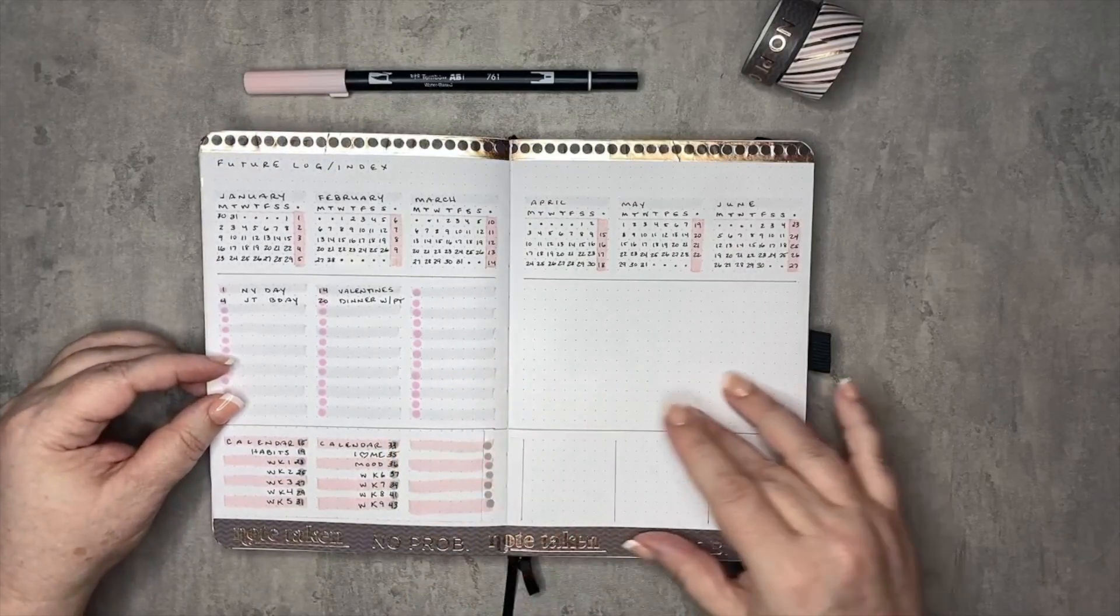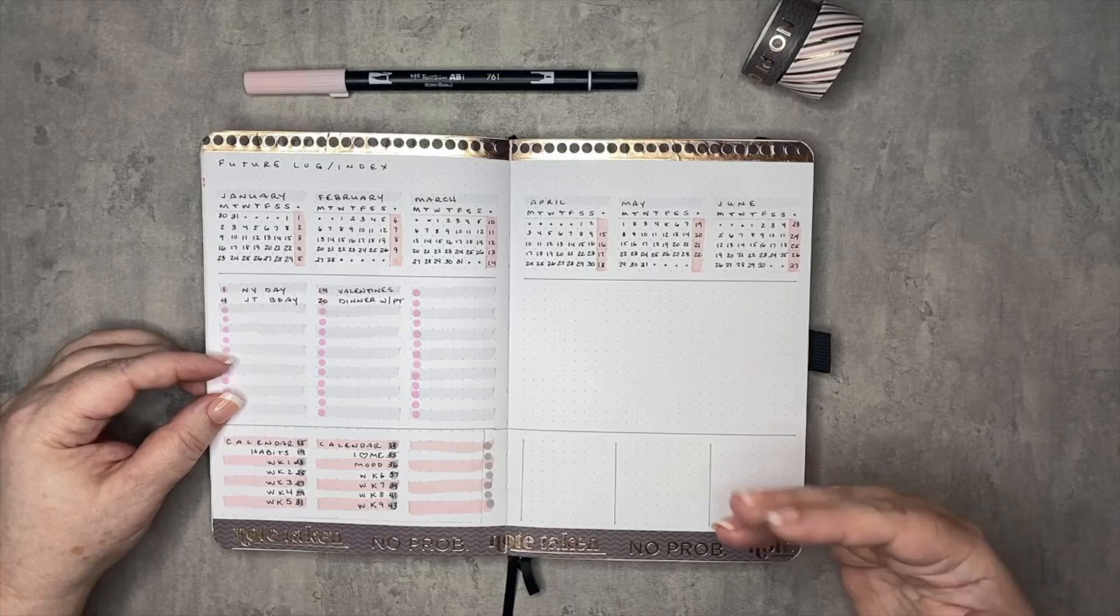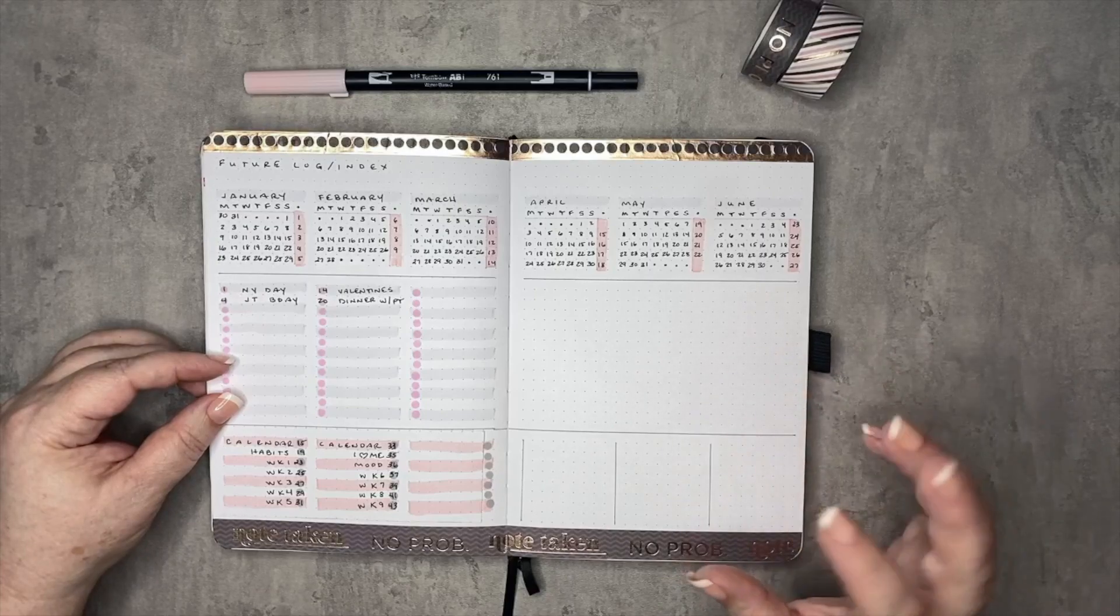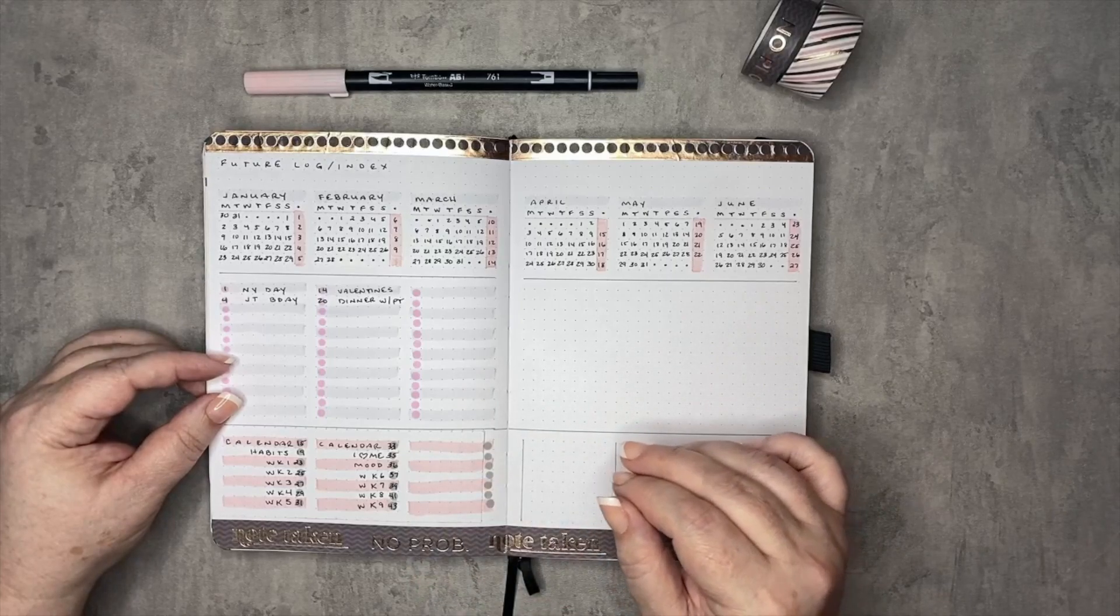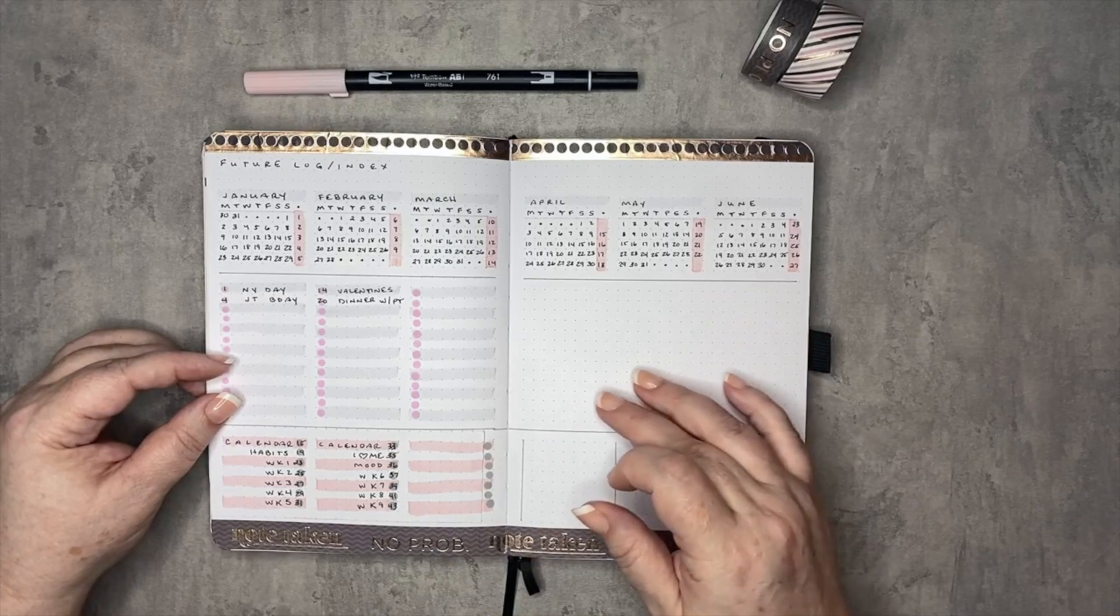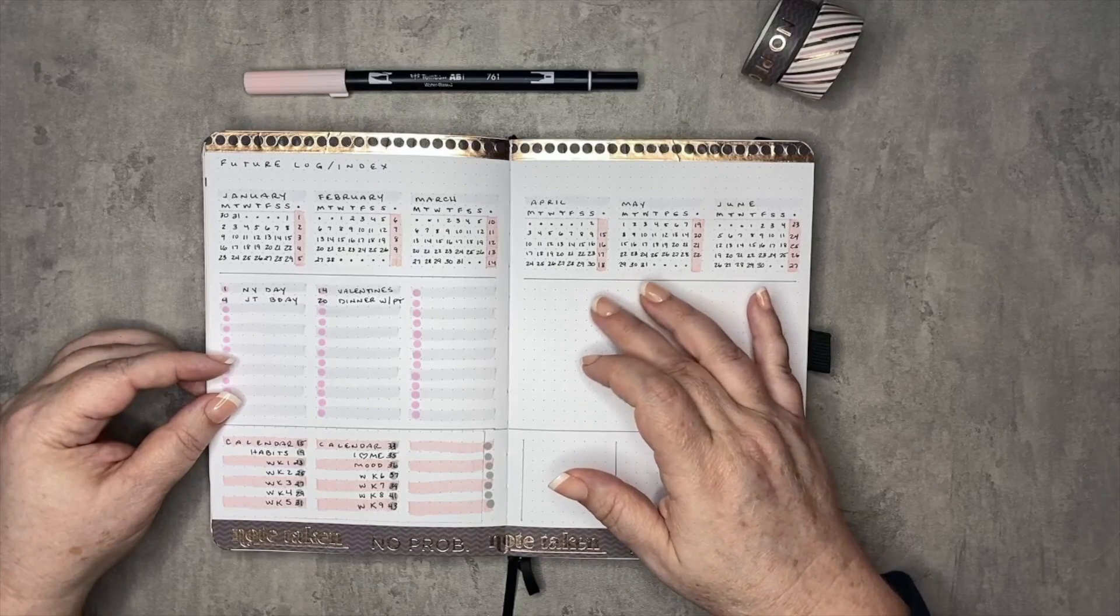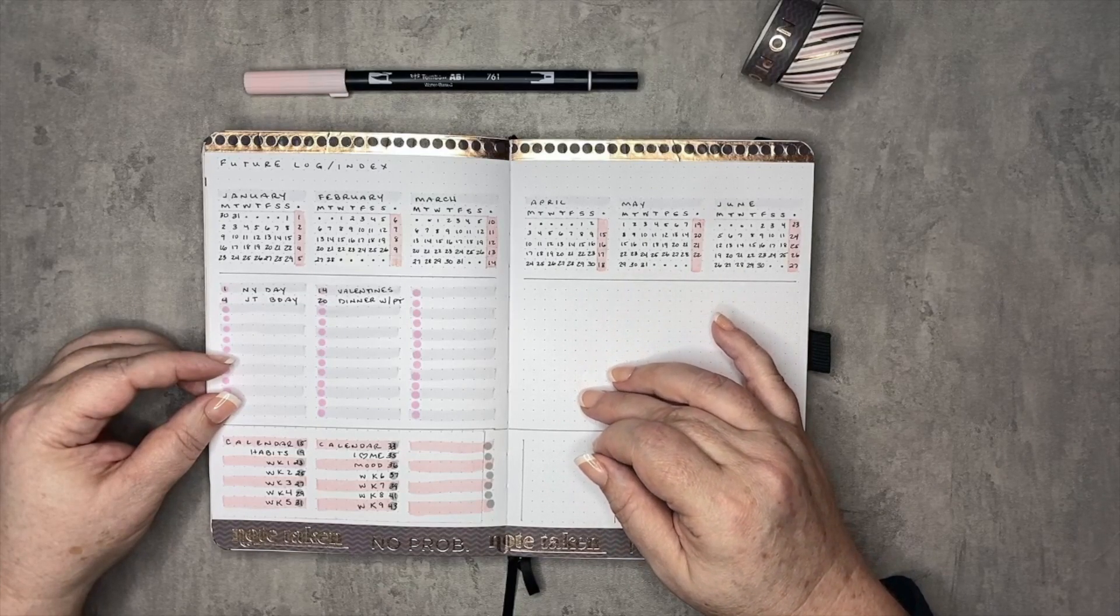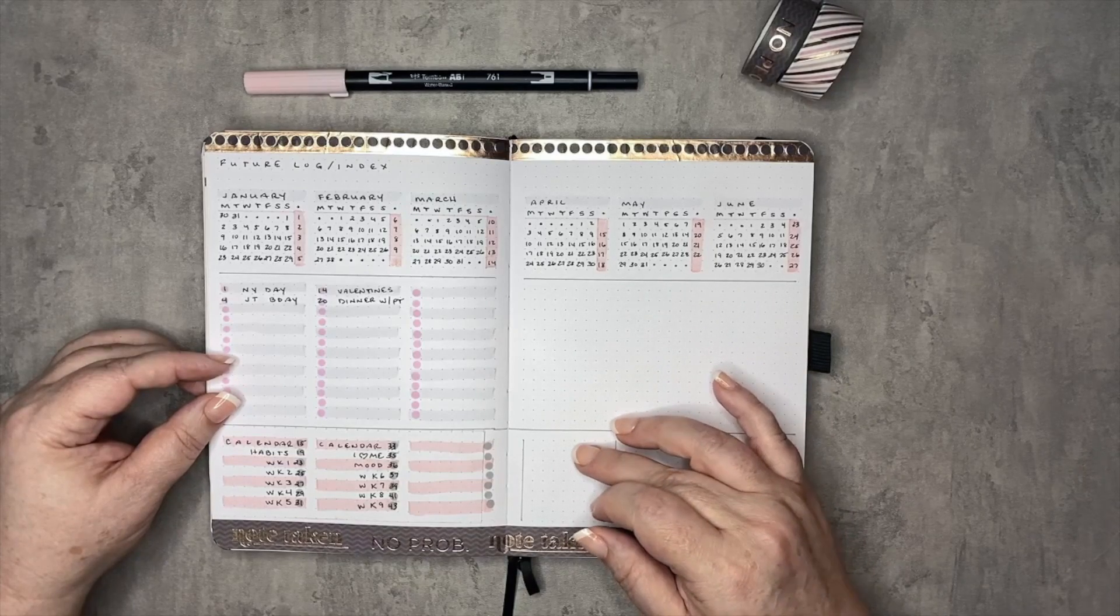Next up is one that I have been testing in my work journal. For those that know I am an event manager. Pretty much everything I do is date oriented. And so this is a combination of future log and index. And it's really going to depend on how much space you need for your regular monthly appointments, things that you're scheduling in advance so that you know where they are, and then how much space you would need for your index.